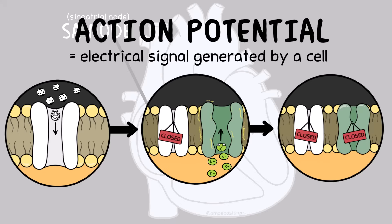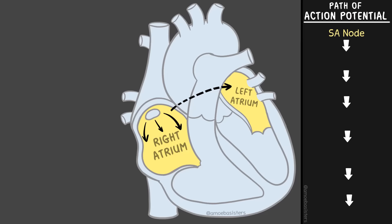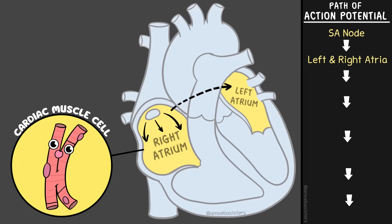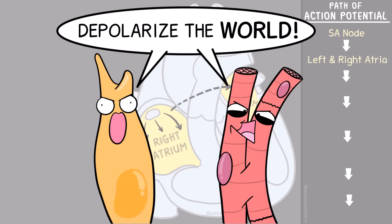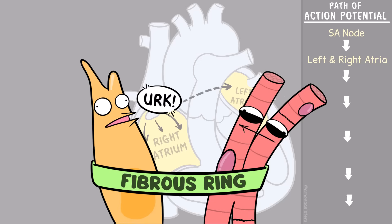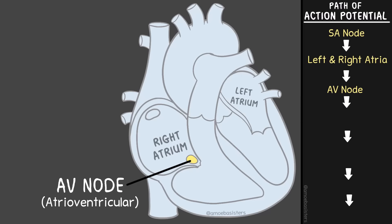The electrical signal in the SA node — all of those events — were part of an action potential. This action potential will spread to neighboring muscle cells in the atria, which will cause them to depolarize and contract. You might assume the signal will make its way directly down to the ventricles, but a fibrous ring keeps the signal from conducting directly to the ventricles. However, the action potential does propagate to something called the AV node.